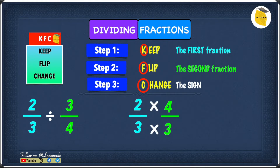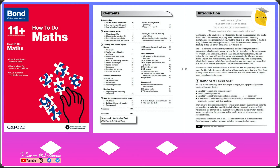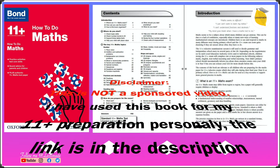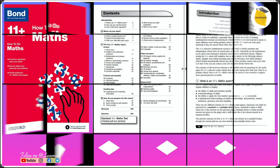This means we have to find 2 times 4 and 3 times 3. 2 times 4 gives you 8, and 3 times 3 gives you 9. So the answer to this question is 8 over 9. If you want to know more on fractions, I've got a link in the description and in the comments section below.